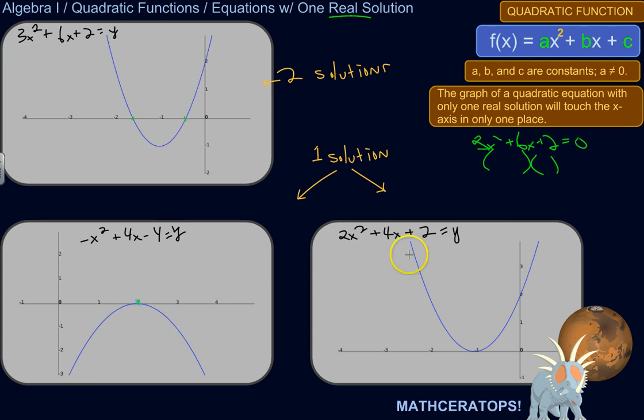So another similar example here, y equals 2x squared plus 4x plus 2. If you were to solve that algebraically, or solve it by graphing and looking for the root, you'll see that there's actually only one solution here, because it just touches. It doesn't cross through twice like that. It just touches the x-axis.